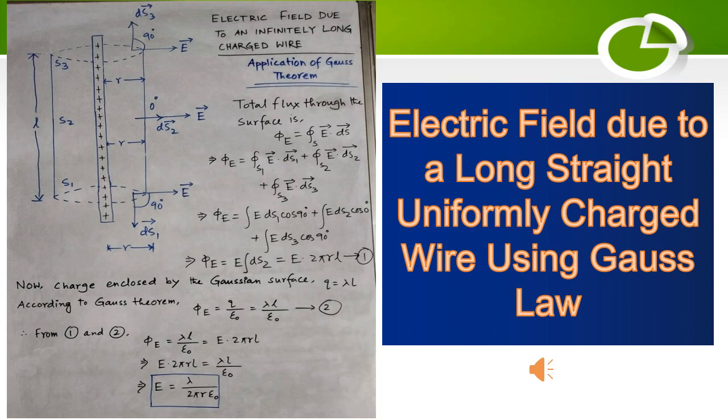By the symmetry, the electric field of the line charge is directed radially outwards and its magnitude is the same at all points keeping equal distance from the line charge.